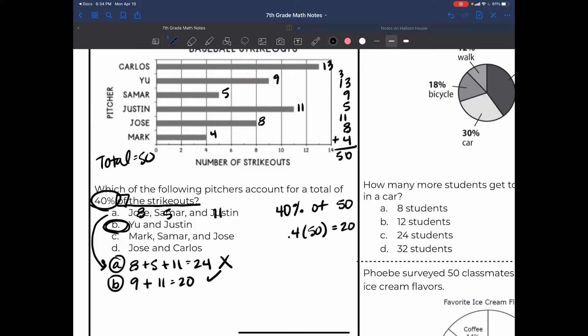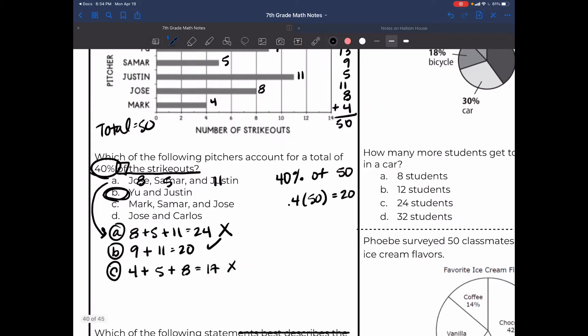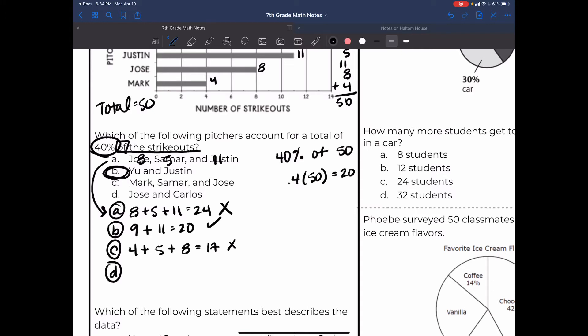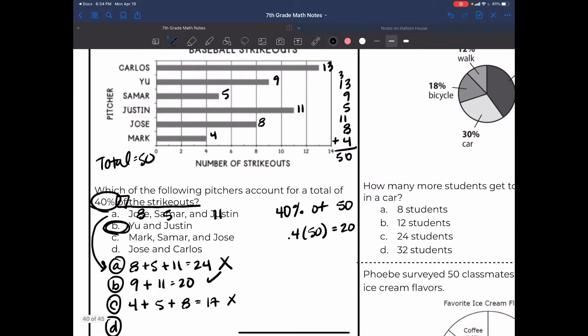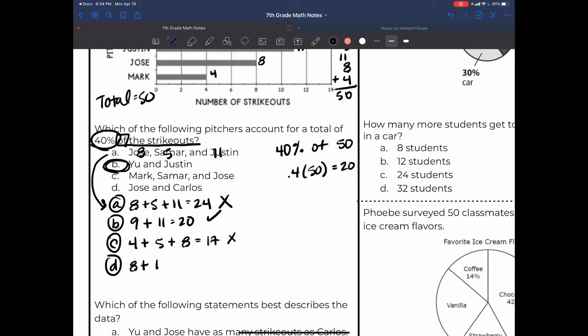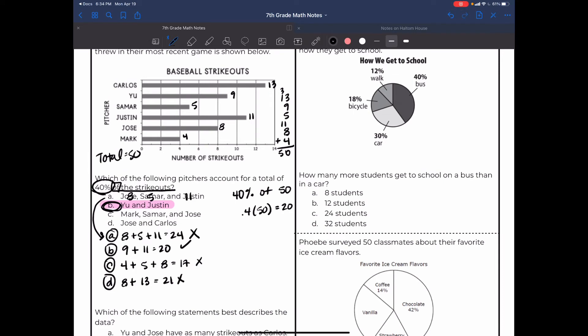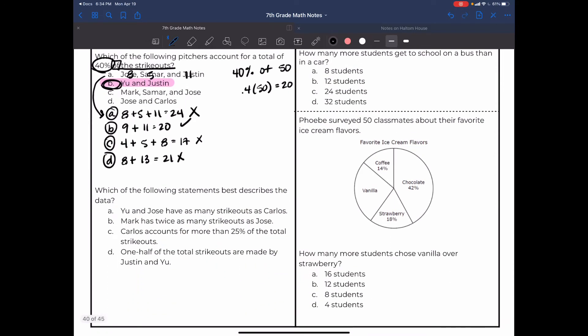Which honestly guys is also a test-taking strategy for this STAAR. I highly encourage you to go through every single answer choice to make sure that the one that you chose is the right one. So C, Mark, Samar, and Jose. Mark had 4, Samar had 5, and Jose has 8. 4 plus 5 is 9, 9 plus 8 is 17, which is not 20. B is still looking like a really great answer. All right, lastly D, Jose and Carlos put together. Jose 8, Carlos 13, and I know 8 and 13 put together is 21, which again is not 20. And that's the magic number I'm looking for, so B is my final answer.